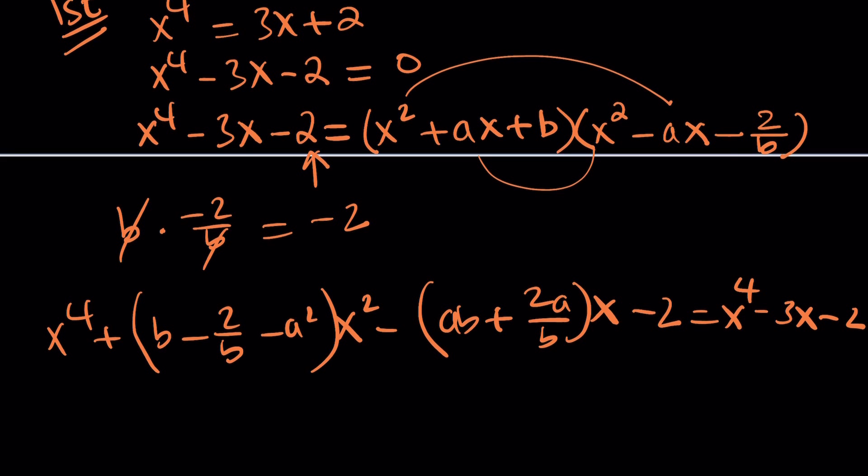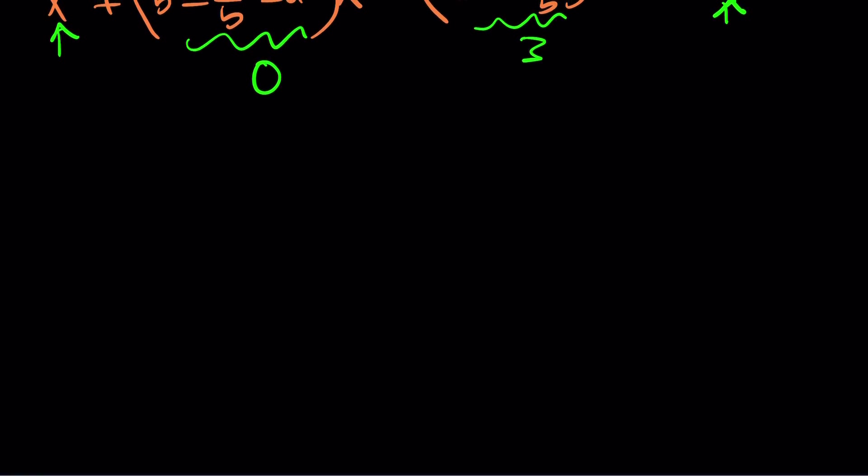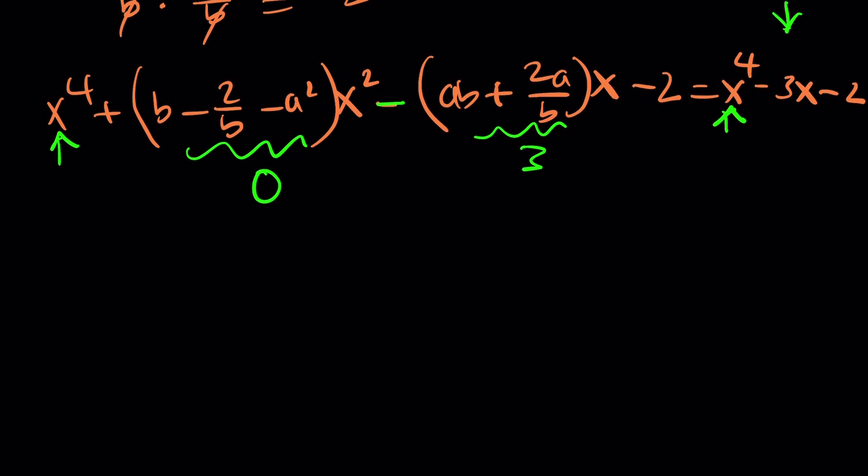And this is supposed to equal x to the fourth minus 3x minus 2. So, we're going to be comparing the coefficients. x to the fourth matches up with x to the fourth. That's good. And then, coefficient of x squared. We don't have any x squared. Houston, we have a problem. Actually, we have a solution too. It's supposed to be 0 because there's no x squared on the right-hand side. What about x? The coefficient of x is negative 3. If you consider the negative sign here, this should be a positive 3. So, this gives us a system of equations.